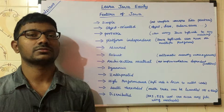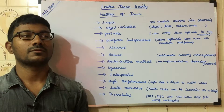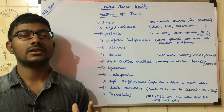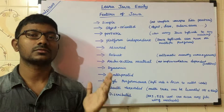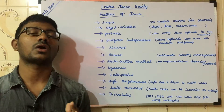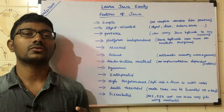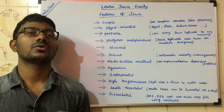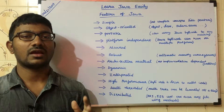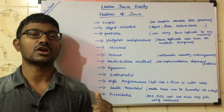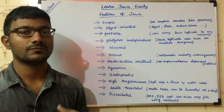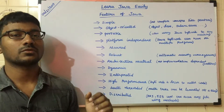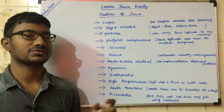And then platform independent. The compiler converts Java source code to .class bytecode, and that bytecode is platform independent — any platform can run it. Each platform has its own specific JVM. We have already discussed this in more detail in the previous video, so if you haven't watched that, please go and watch it.